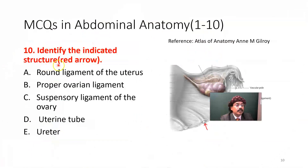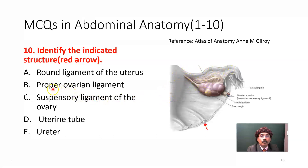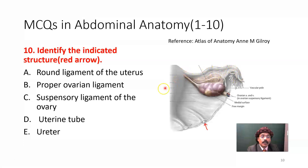Question number nine: Identify the structure indicated by the red arrow. This is the posterior aspect of the uterus showing the ovary and fallopian tube. The round ligament is not shown here. The proper ovarian ligament, the suspensory ligament of the ovary, and the uterine tube are visible — including the infundibulum, ampulla, and isthmus. The structure indicated is the ureter.